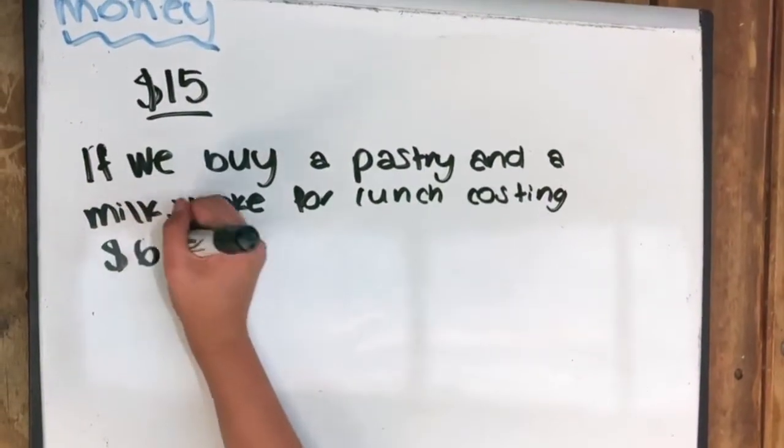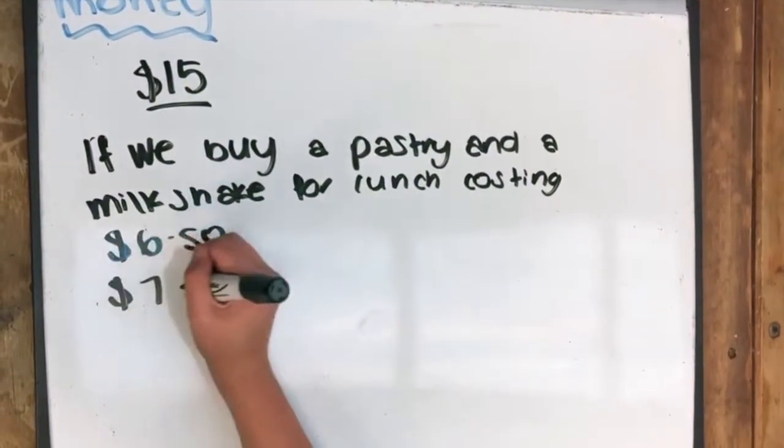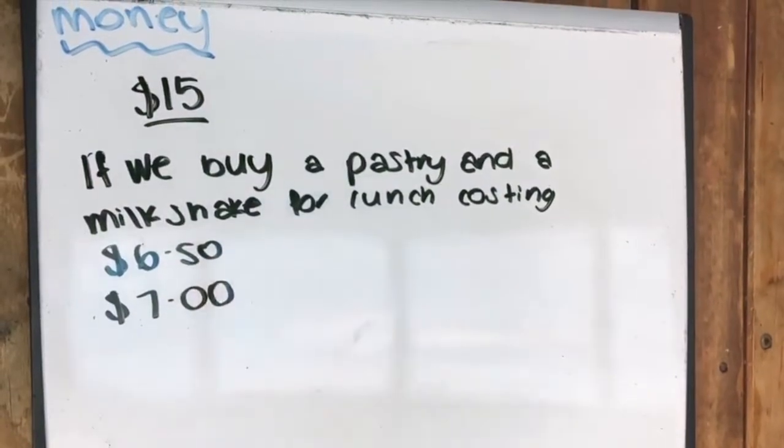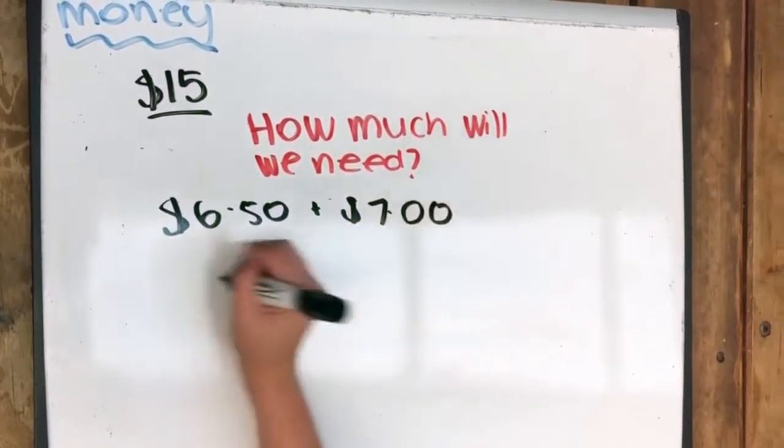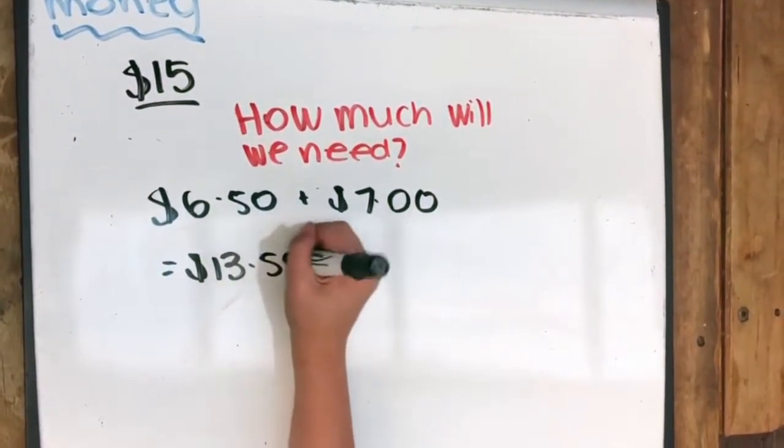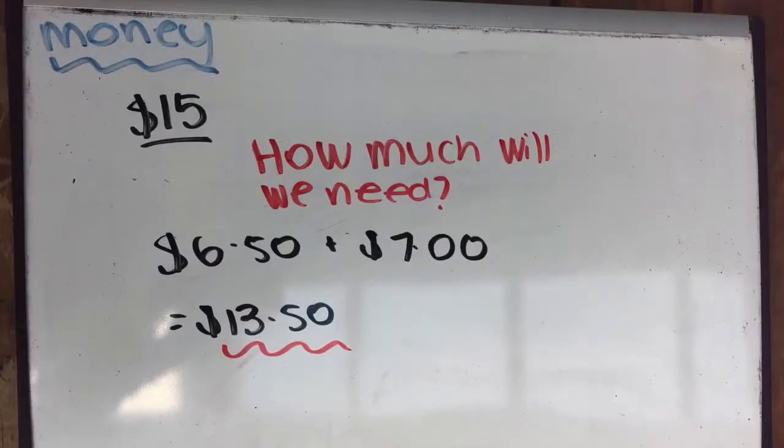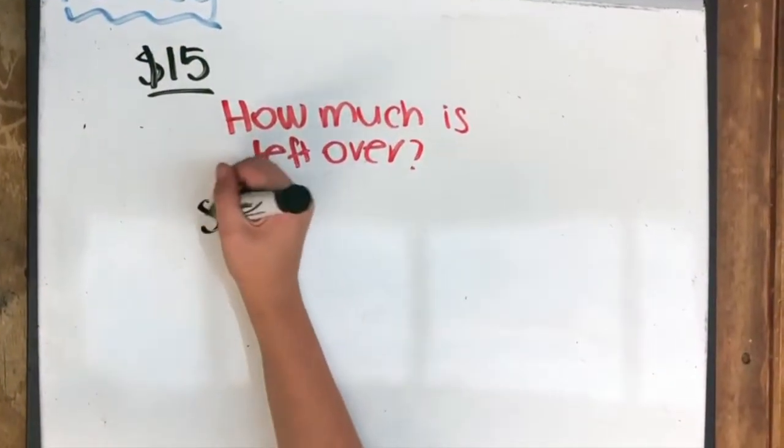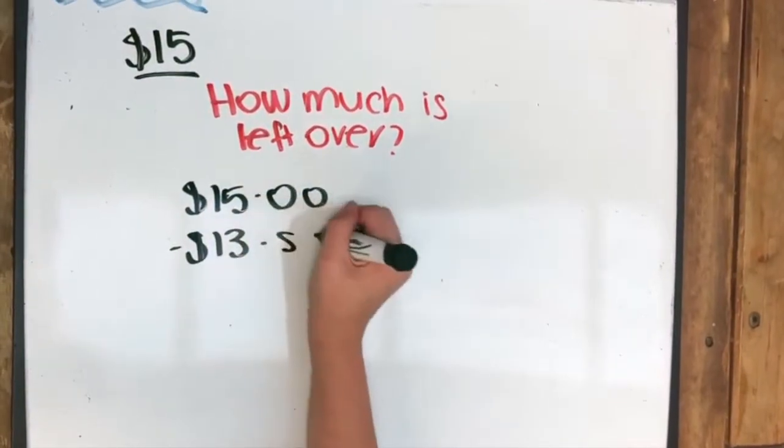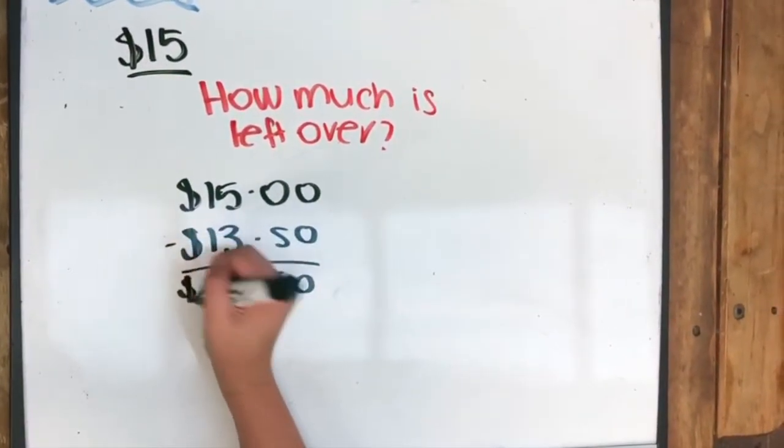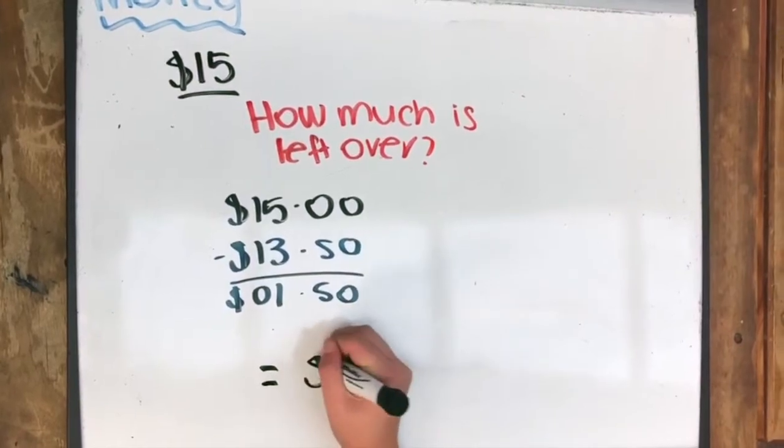If we buy a pastry and a milkshake for lunch costing $6.50 and $7, equals $13.50. 15 take 13.5 equals 1.5. Leaving us with a $1.50 change.